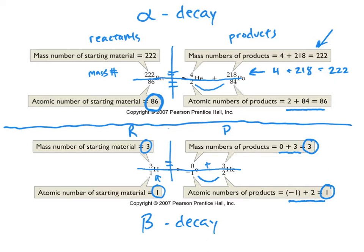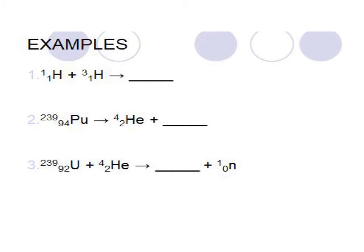What you're going to have to do is solve for the unknowns — one place will be blank in these equations. These equations are like simple algebra: if three equals x plus one, then x equals two. We're doing the same thing, just with elements and radioactive decay. We'll practice several examples of these.